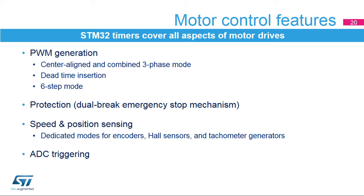This slide summarizes the timer's four main electrical motor control features. The timer includes specific PWM modes for controlling power switches, including center-aligned and combined three-phase PWMs, dead-time insertion for complementary PWM generation, and six-step mode for driving brushless DC motors. It includes power stage protection with a dual-level emergency stop mechanism to disable PWM outputs by hardware in case of fault. It handles quadrature encoders and hall sensors for position feedback and tachometer generators for speed feedback. The timer also includes synchronized ADC triggering options for proper voltage and current sensing.